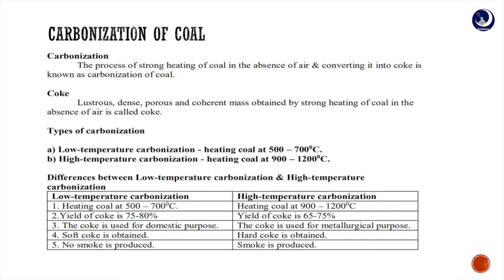In low temperature carbonization, the yield of coke is 75 to 80 percent, and this coke is used for domestic purposes. Whereas high temperature carbonization means heating coal at 900 to 1200 degrees Celsius — here smoke is produced, the yield of coke is 65 to 75 percent, and the coke is used for metallurgical purposes.